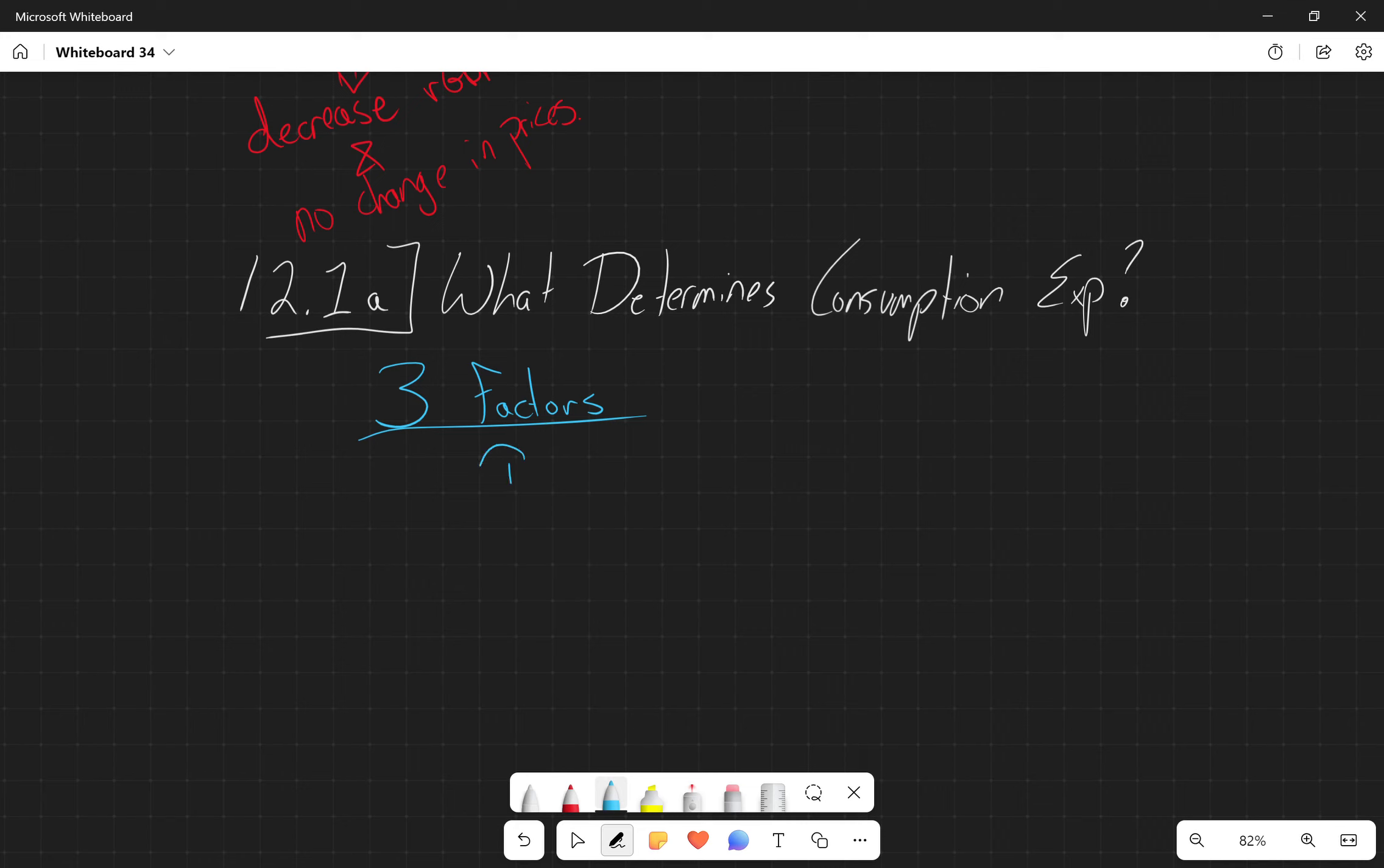So the first one that we have is our disposable income. Now it's important that we talk about our disposable income because this is our income after taxes. So it's not just our income, it's the income that we actually get to keep.